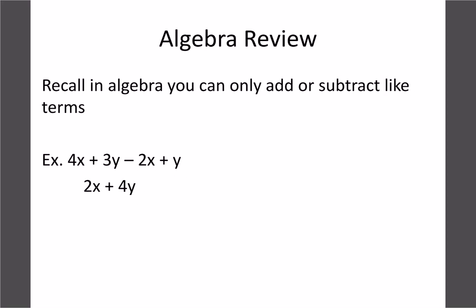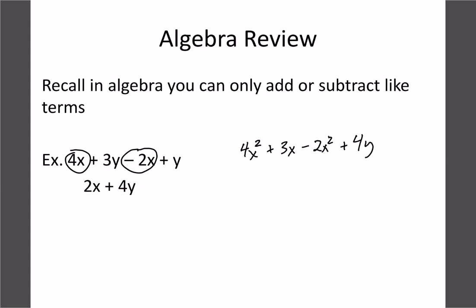Before we get to that, let's think back to some basic algebra. In algebra, we could only add or subtract like terms — to be a like term, we had to have the same variable. So 4x - 2x gives us 2x, and 3y + y gives us 4y. The same thing applies with exponents: if I had 4x² + 3x - 2x² + 4x, we can only add the ones that are the same. So 4x² and 2x² go together to give us 2x², and 3x + 4x gives us 7x.